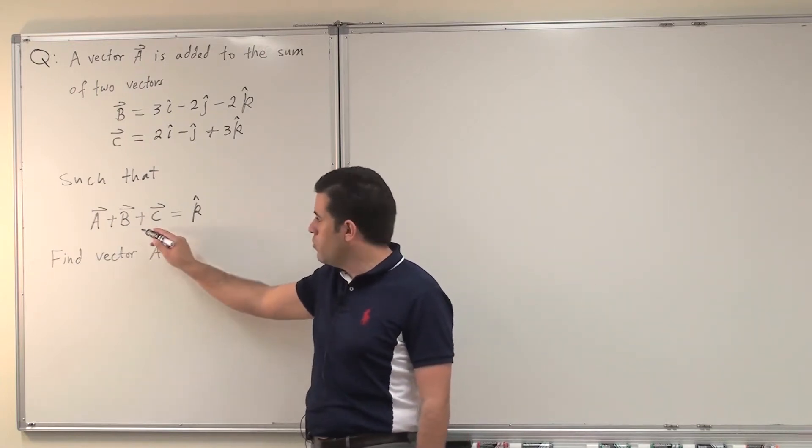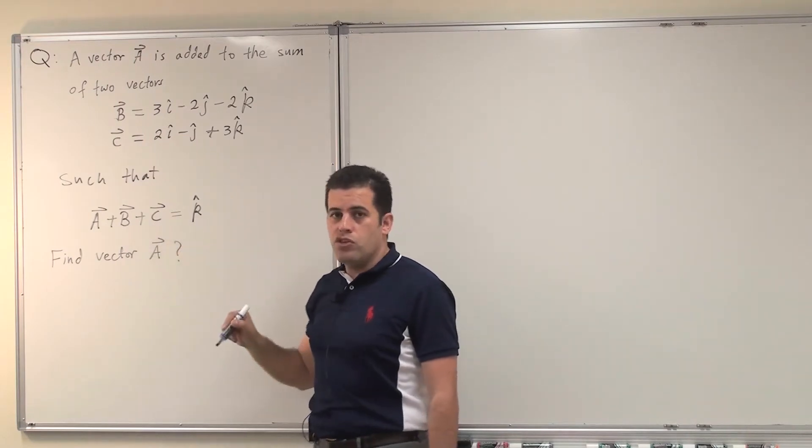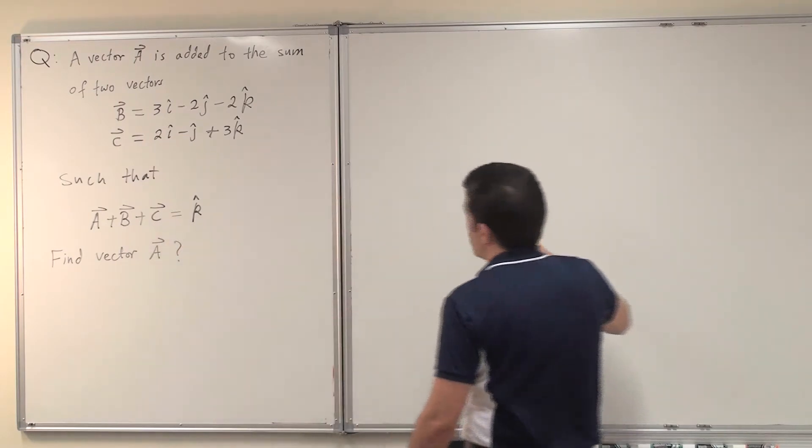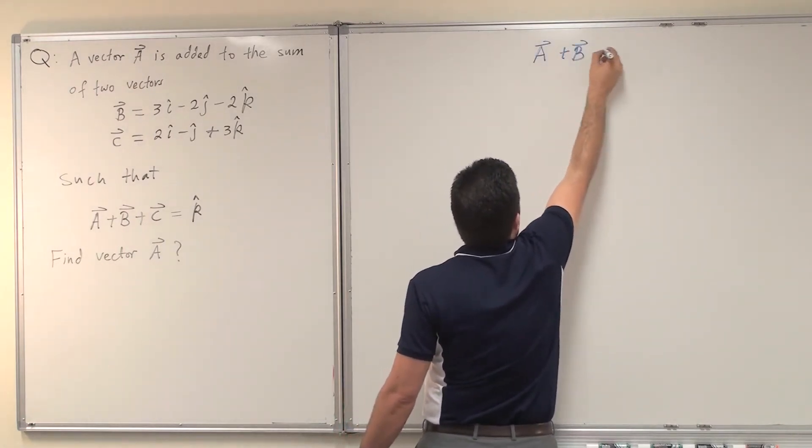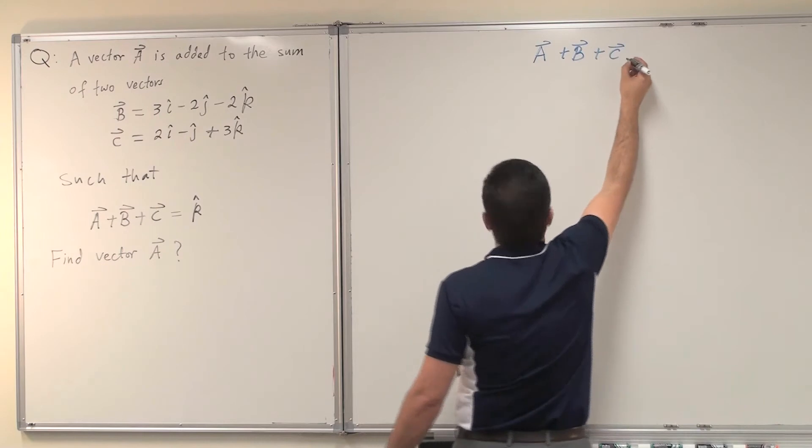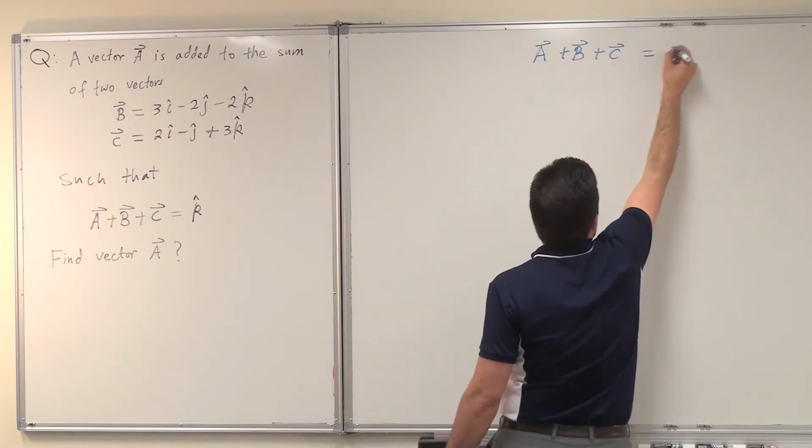So I don't know vector A, but I do know B and C, and I know the sum should equal k-hat. So I utilize the equation given: A plus B plus C should equal k-hat.